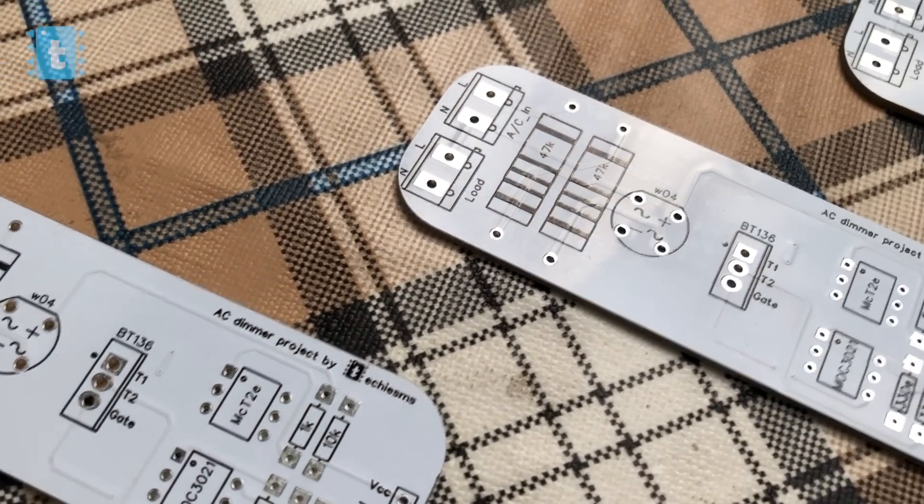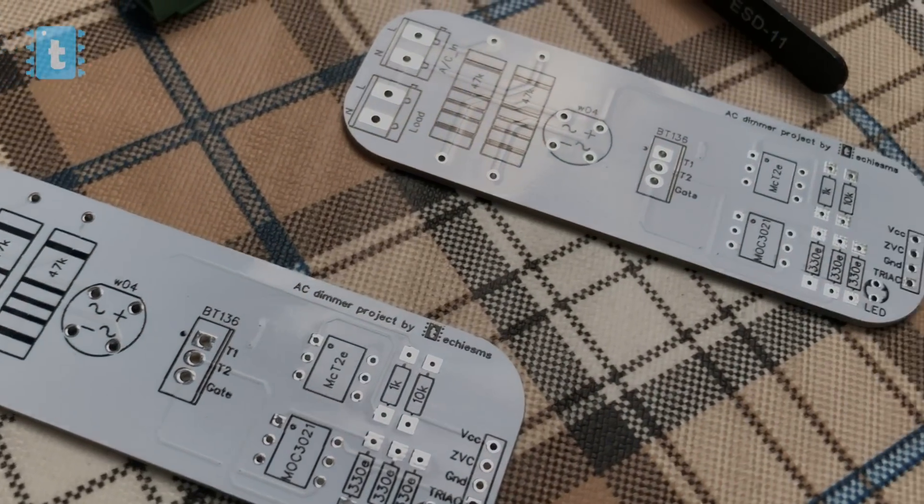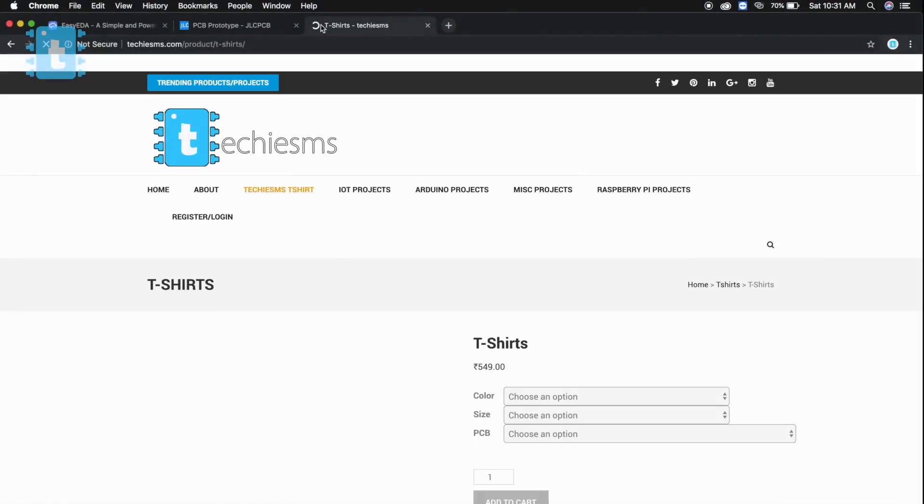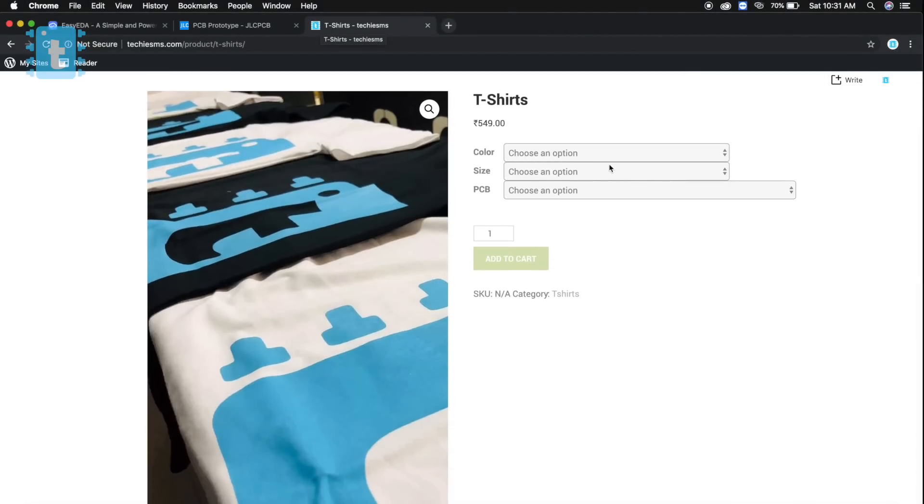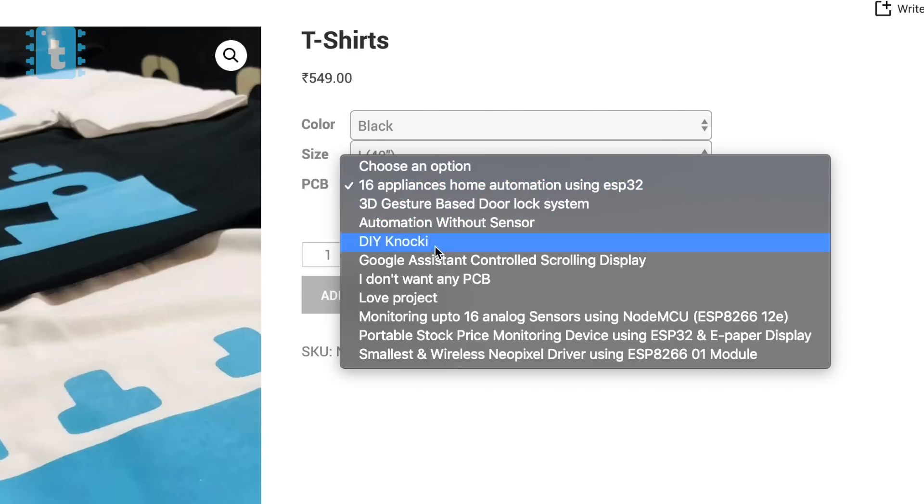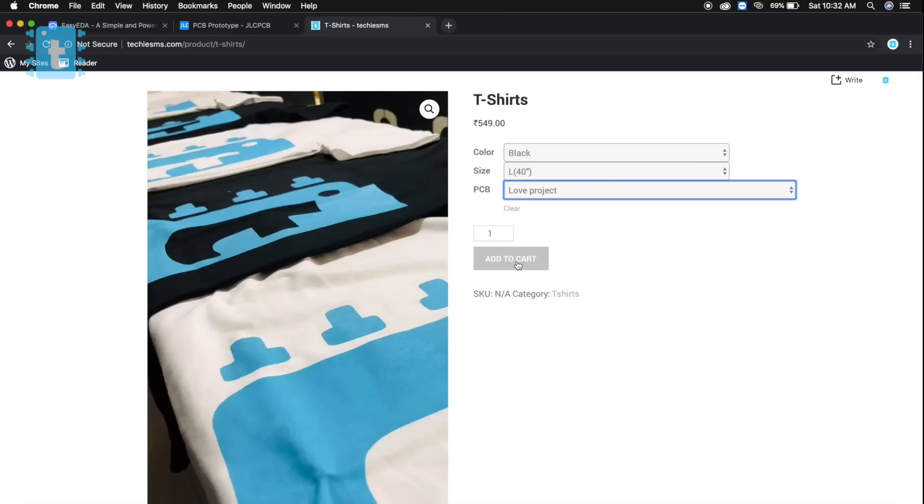So try out JLCPCB once to make your projects look neat and more compact. And if you want the same PCB which I have, then I am giving free PCBs to everyone who orders a Techie SMS t-shirt. Just select the PCB you want on the t-shirt order form and you'll get the PCB absolutely free.